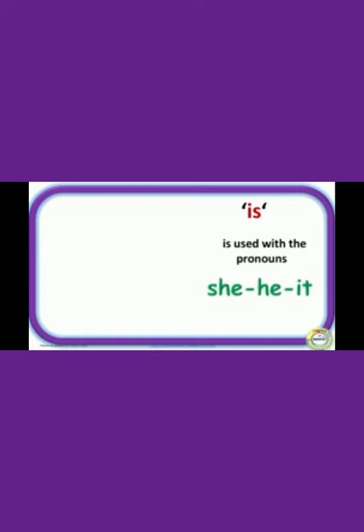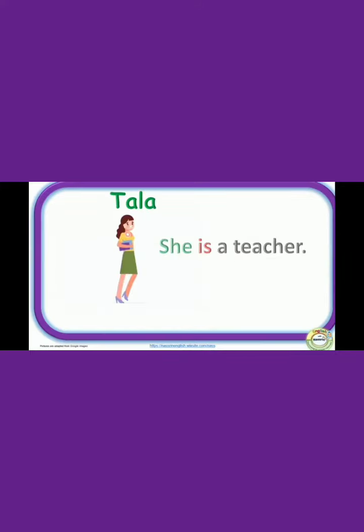Is is used with the pronouns she, he, and it. Like Tala — she is a teacher. This sentence starts from she, so we use Is with she.